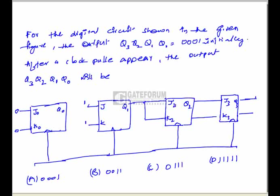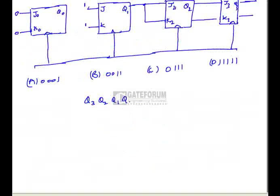For the digital circuit shown, the initial output Q3, Q2, Q1, Q0 is 0, 0, 0, 1. After the clock pulse: Q0 does not change because J0 and K0 are both 0, so it remains 1. Q1 toggles because J and K are both 1, so Q1 becomes 1. Q2 depends on the previous state of Q1, which was 0, so Q2 does not change and stays 0. Q3 also stays 0. The output becomes 0, 0, 1, 1, so option B is correct.